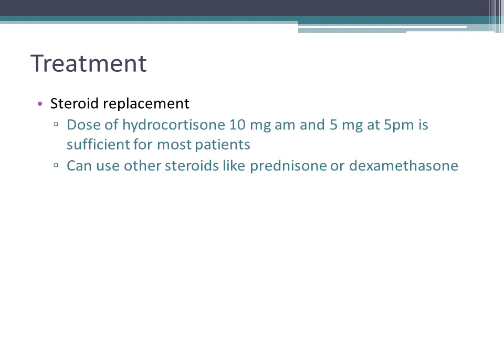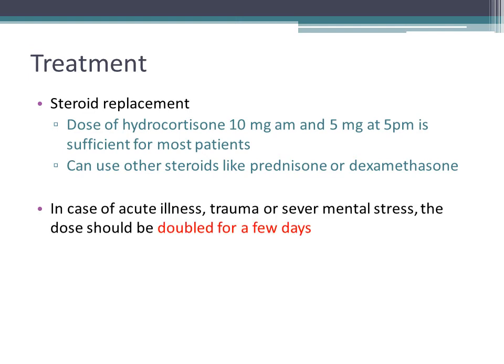Other steroids like prednisone or dexamethasone can be used but are less common. It is critical to alert patients with adrenal insufficiency that when they get ill, their adrenal glands cannot produce extra cortisol to cope with stress. If they undergo surgery, major trauma, or acute illness, they can go into adrenal crisis unless they double their doses for several days or receive intravenous steroids perioperatively.